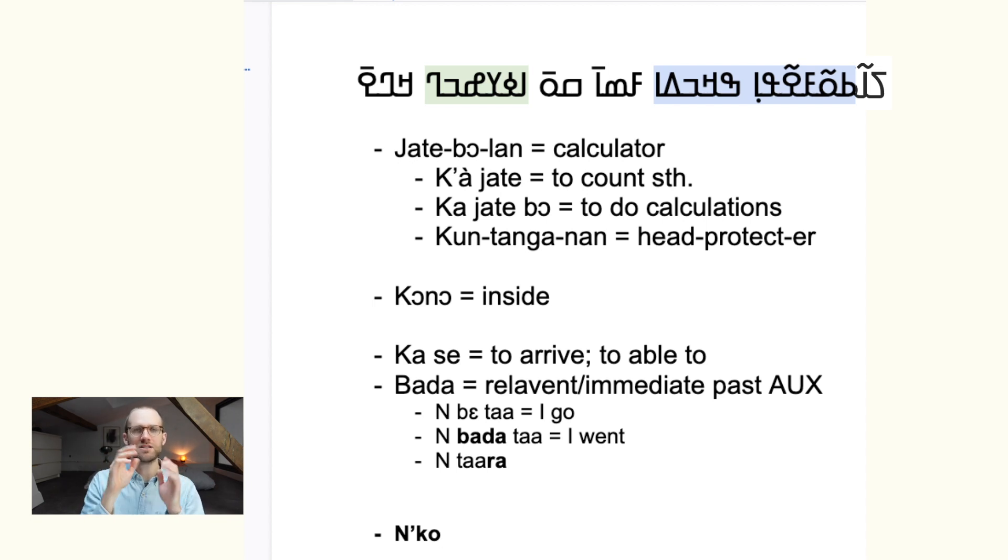So I'll write it like this conventionally. So unko would mean this writing system, and when we say unko man, that is then turning into something that has the property of being in N'ko.